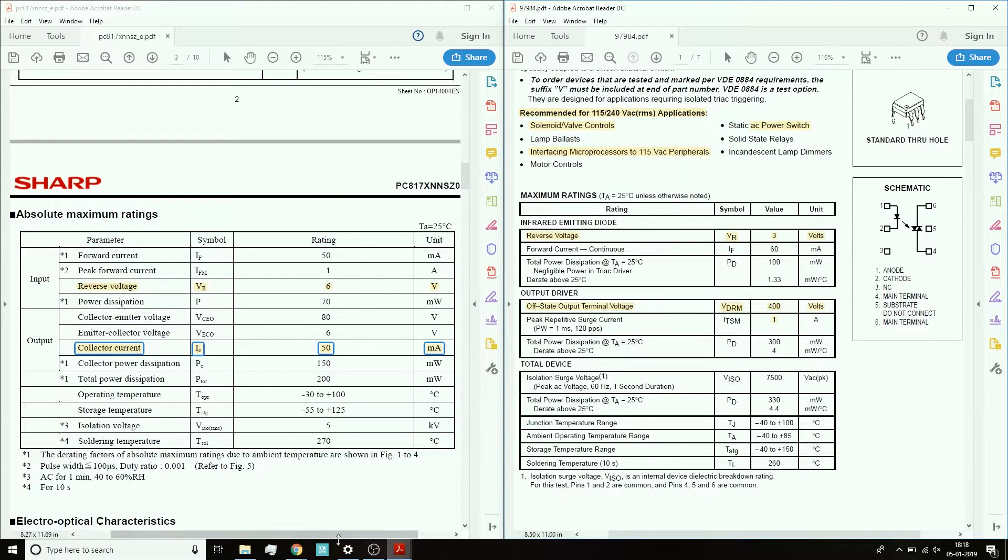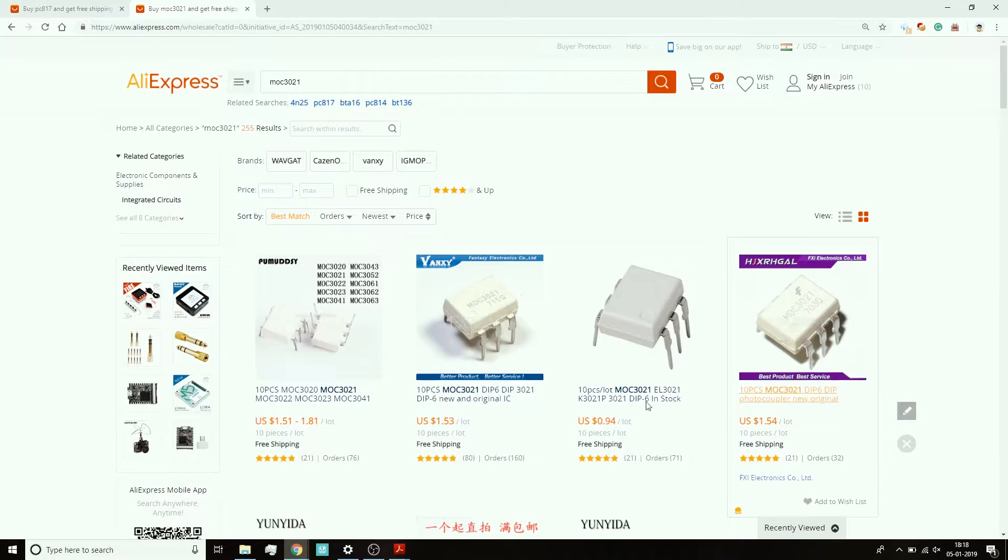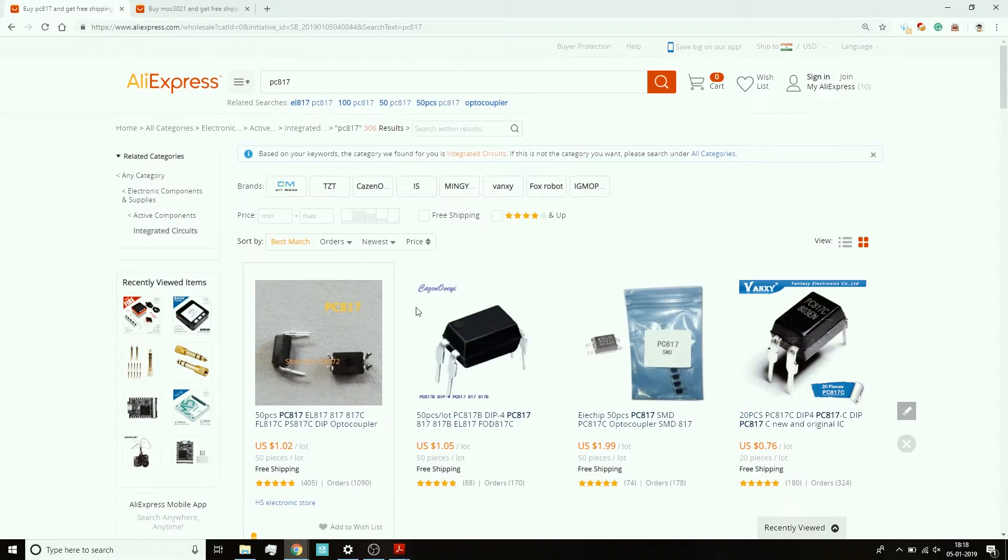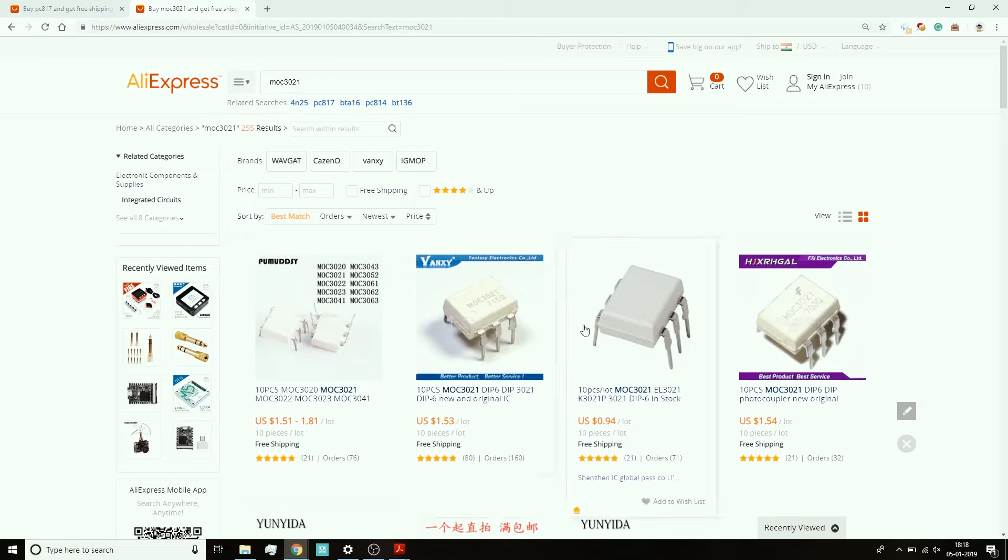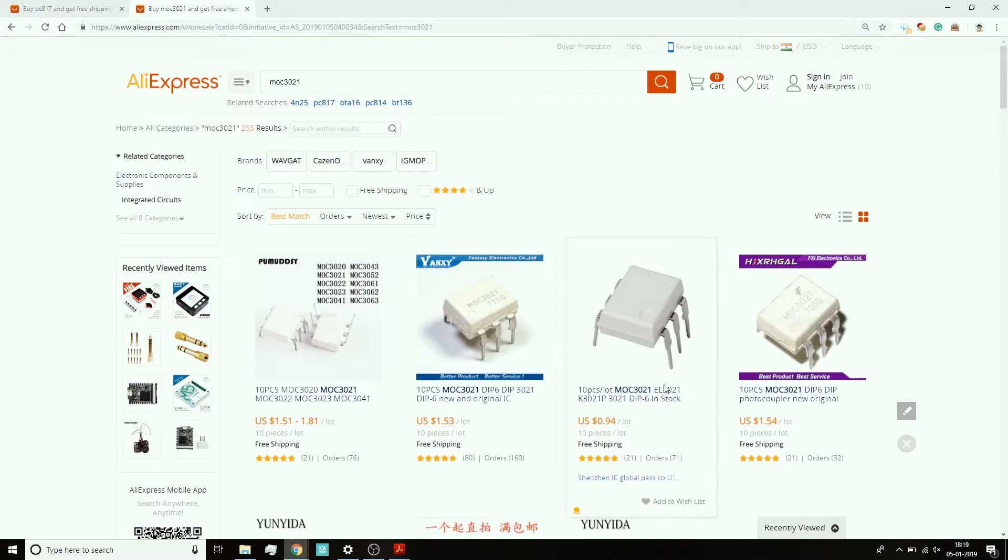These were the data sheets. Now checking out the cost for these, I have this open on AliExpress. The cost of the MOC3021 for 10 pieces is like a dollar and for the same dollar you can get 50 pieces of the PC817. Now agreed that this works only on DC and this will work on AC as well, but yeah PC817 is like cheap, cheaper than transistors. This is a little bit costly, but yes this is a real life saver, literally you can save lives while putting optoisolators and optocouplers in proper AC circuits.